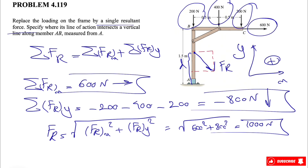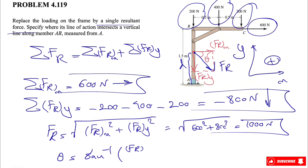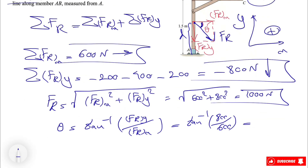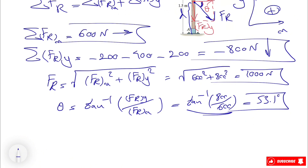FRy is the vertical component and FRx is the horizontal component. To find angle theta, we use the inverse tangent of FRy over FRx — the opposite over adjacent. So theta equals arctan(800/600), which gives us 53.1 degrees. We don't need to worry about the negative signs here since we're applying the direction when finding this angle. So we found a magnitude of 1000 N at 53.1 degrees.